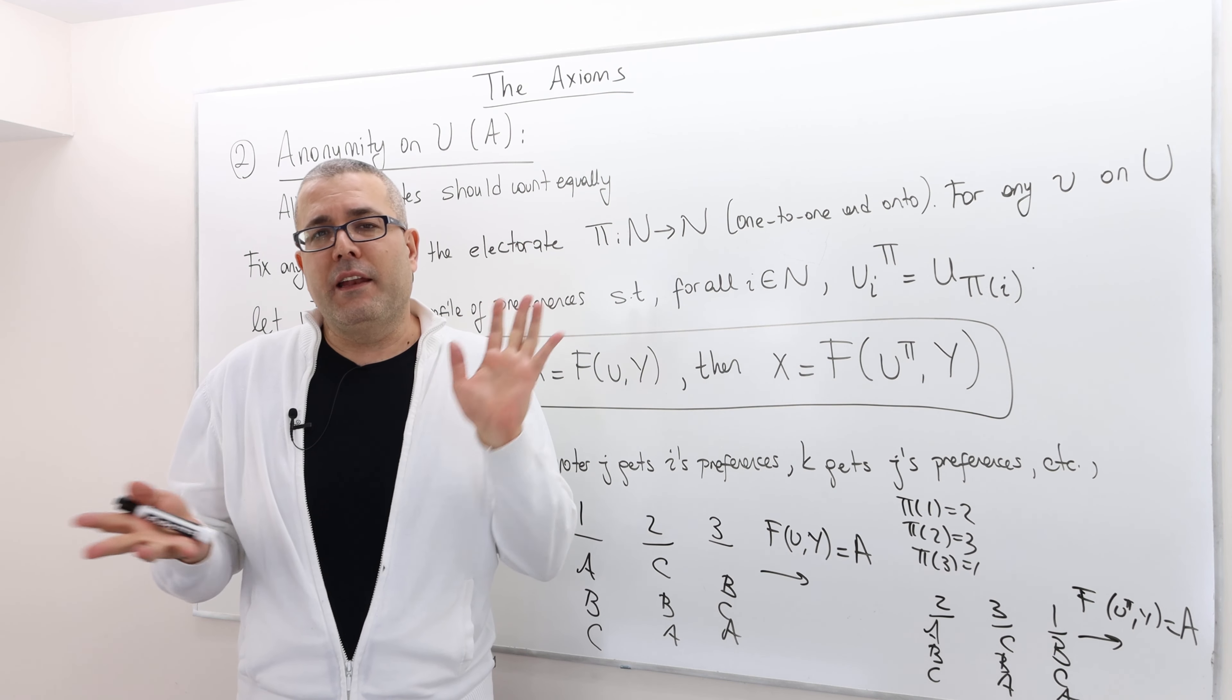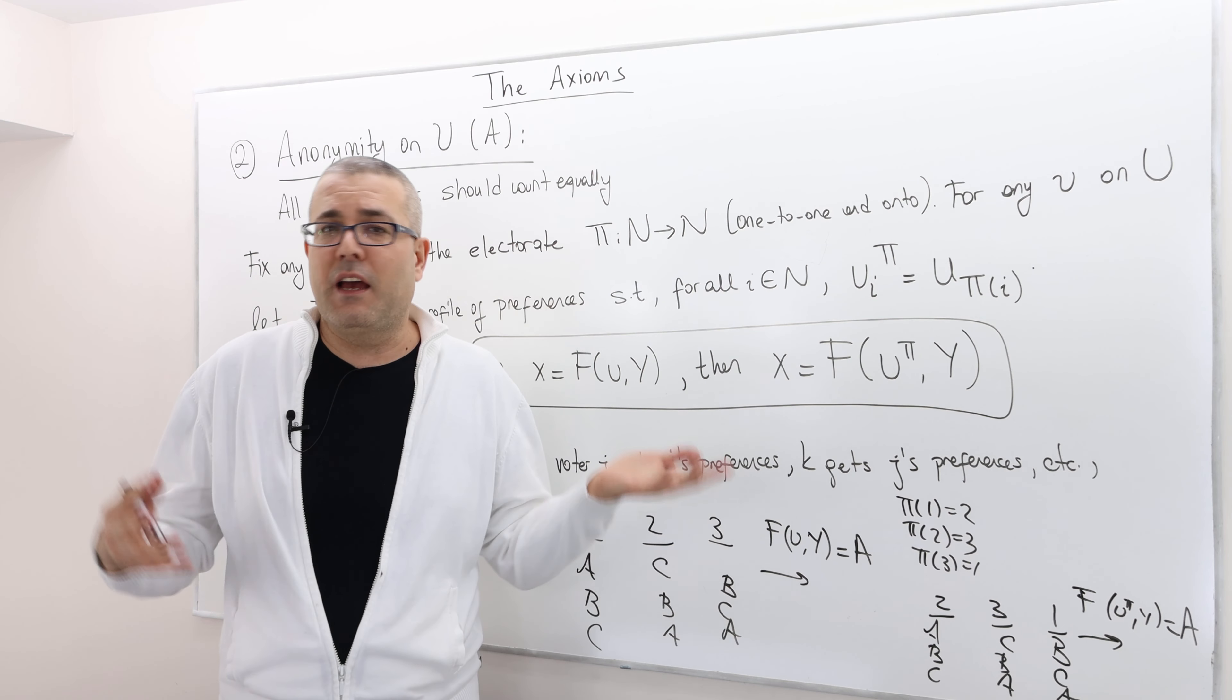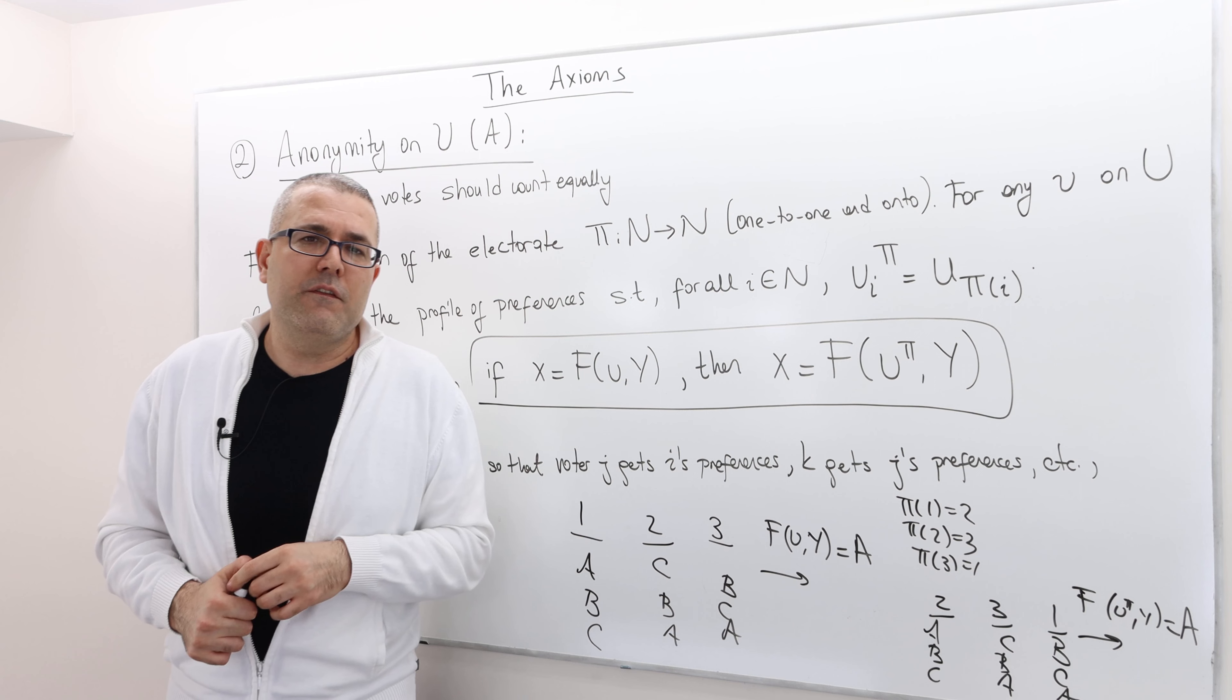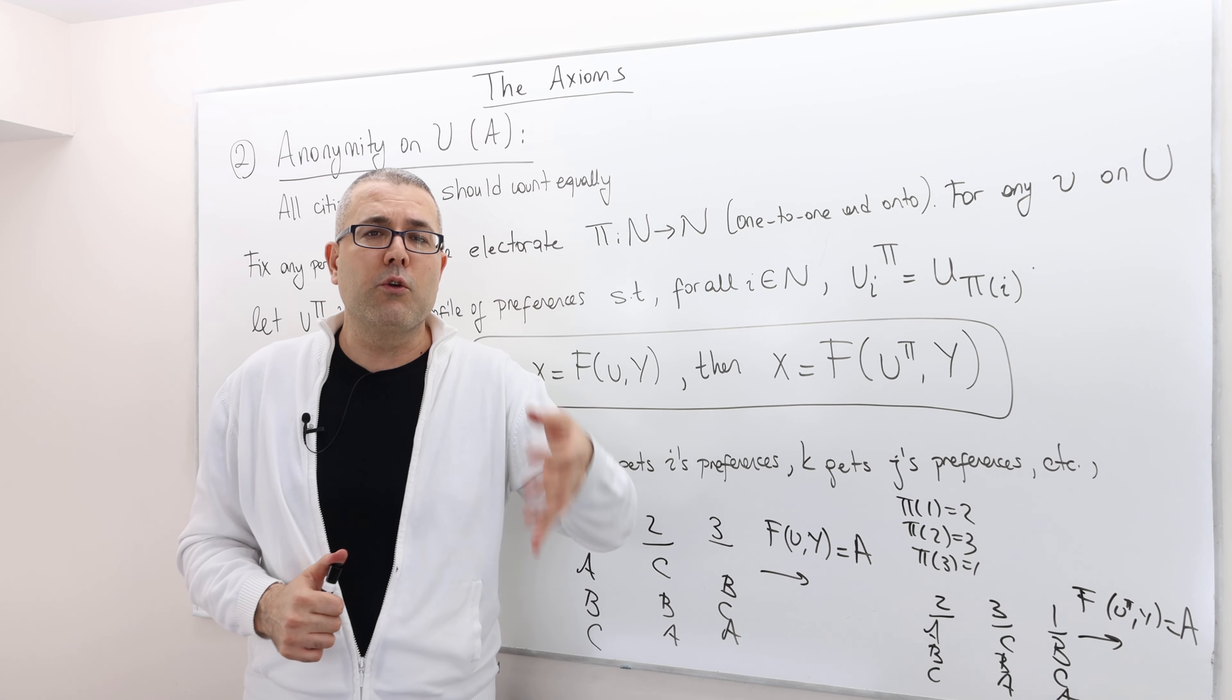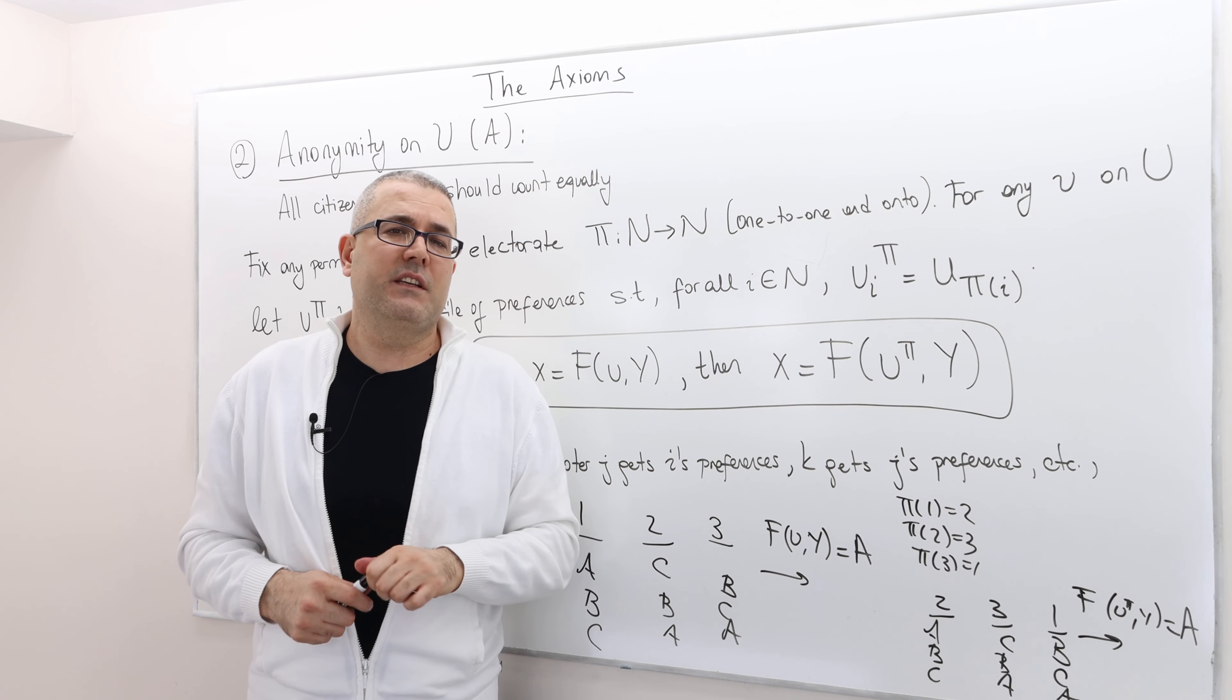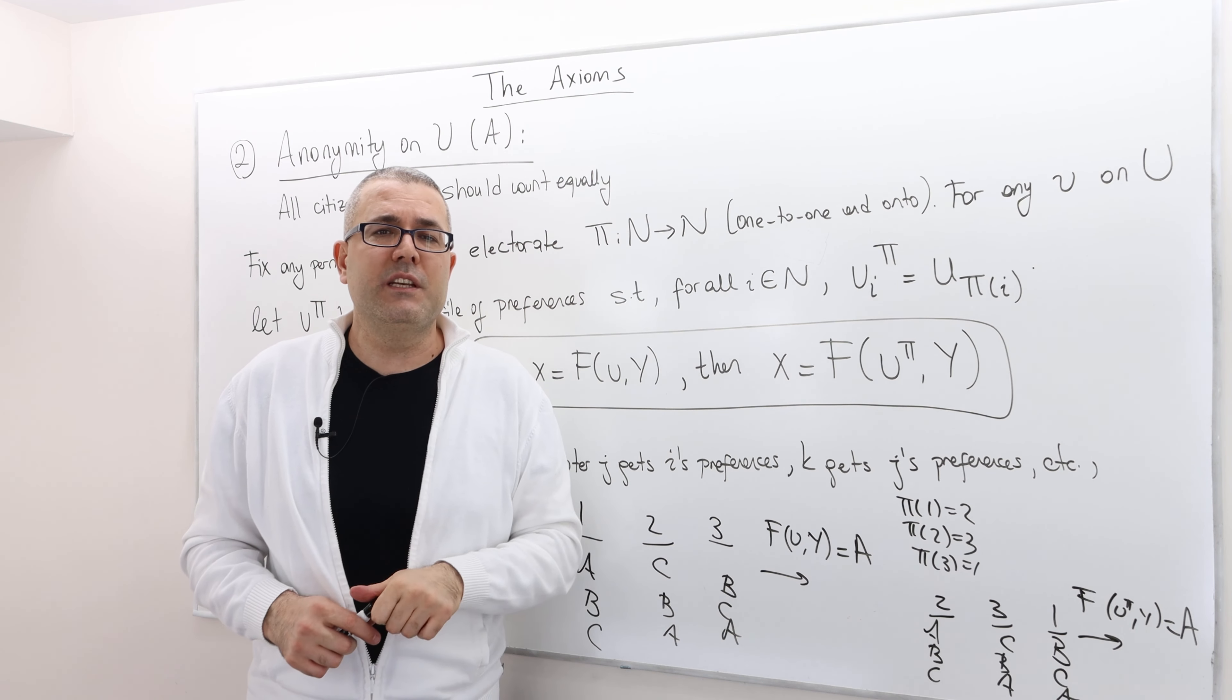Well, again, as I said, most of the voting rules that I described at the beginning satisfy that quite intuitive property, but obviously if the voting rule that you're applying is giving priority to some candidates, like, for example, the most senior voter gets to choose his alternative, best alternative.